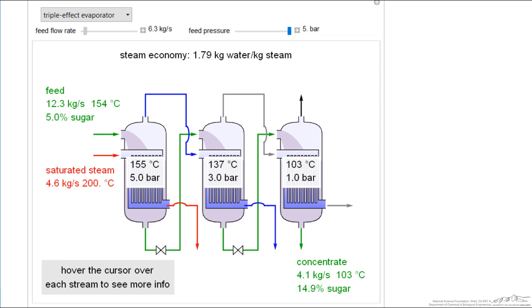If I increase the flow rate, notice I'm lowering the sugar concentration in the concentrate because I'm processing much more. The steam economy increases above 2. This demonstrates the significant increase in energy efficiency with multiple effect evaporators.